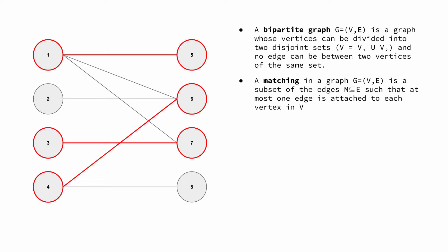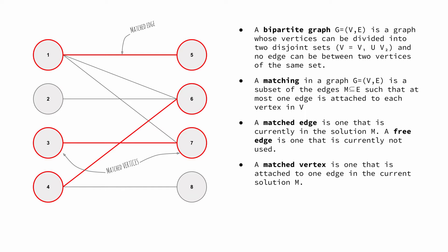The edges and vertices colored in red are matched, that means that some of the vertices from the set on the left have been connected to the set to the right. As you can see, a vertex cannot be matched to more than one vertex.